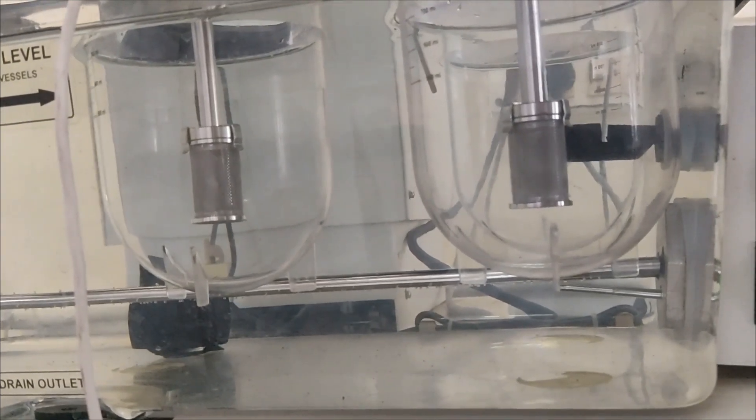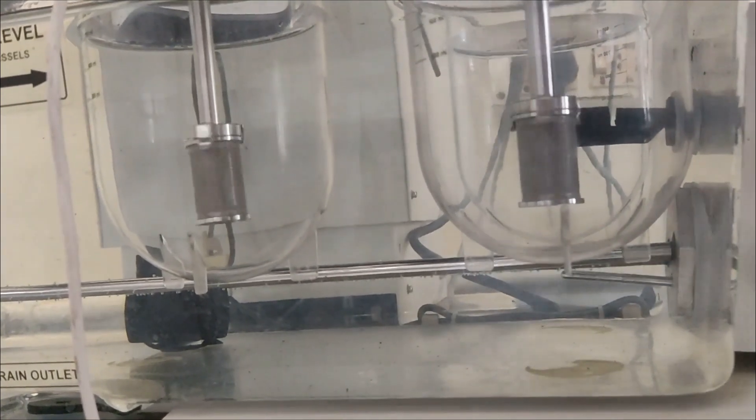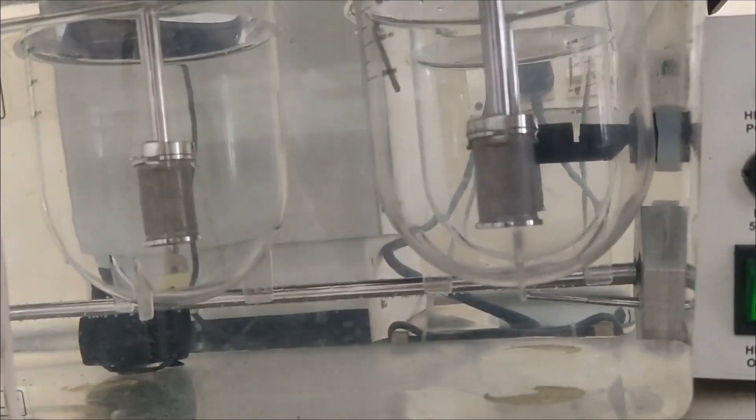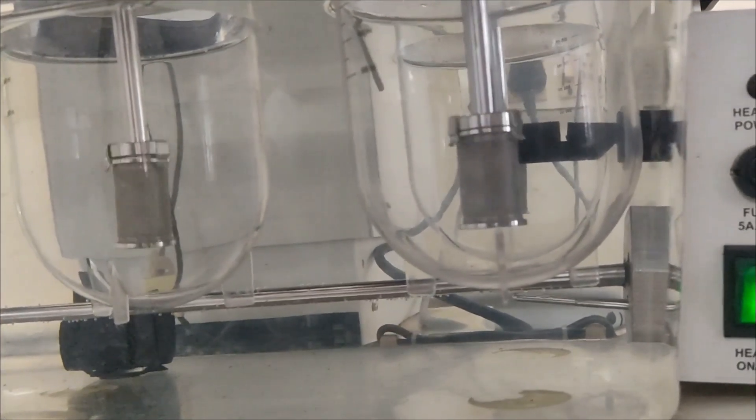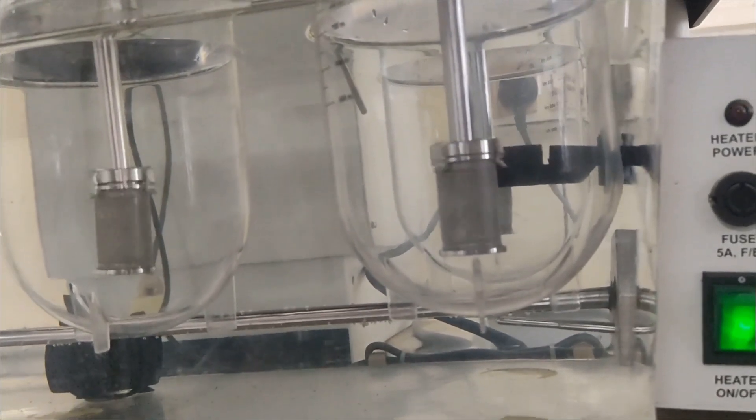The sample is kept inside the basket, which rotates inside the dissolution vessel at a given RPM. The test measures the amount of active ingredient that is released from the dosage form into the liquid over time and is used to determine the rate and extent of drug release from the dosage form.